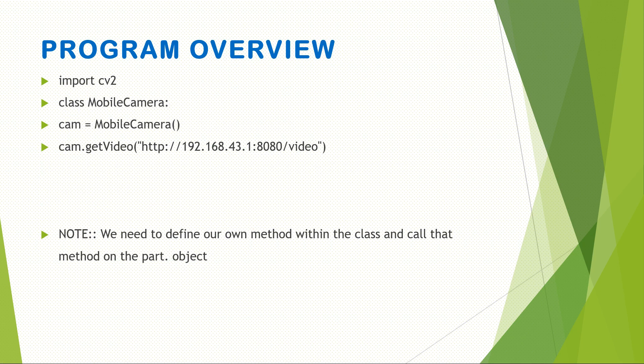The program overview looks like this: import cv2, which is the important library for image and video processing. Then define a class named MobileCamera. Create an object: cam = MobileCamera(). We have a method called get_video, which is called on the object cam, passing the IP address. So the steps are: import libraries, define the class, create the object, then call the method on the object.